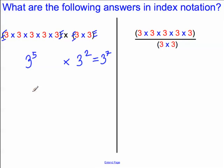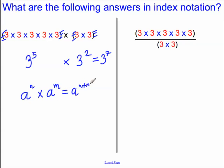You may spot a pattern there. In general, for any number to the power of n multiplied by the same base number to a different power, say m, the answer you will get is a to the power of n plus m. You can add the indices if you are multiplying base numbers that are the same to varying indices.